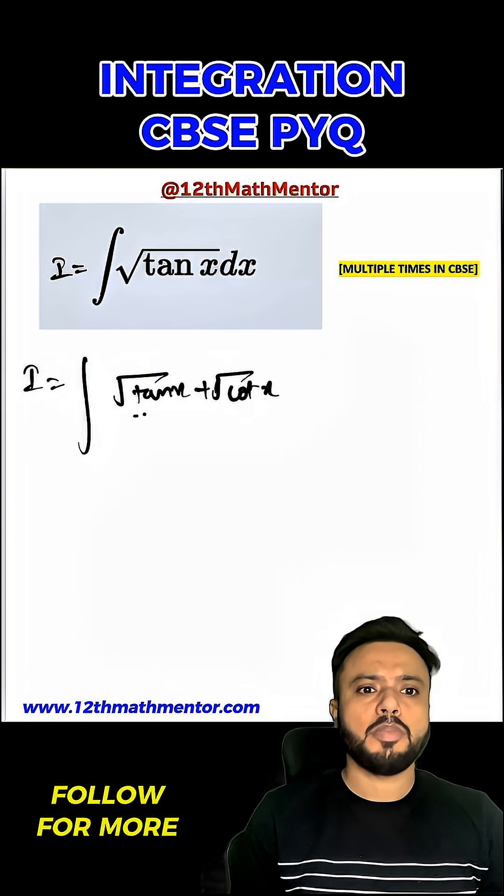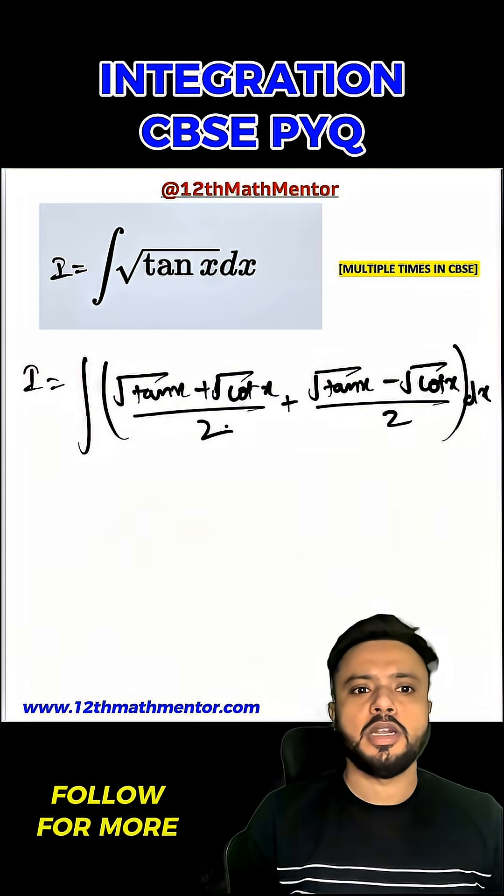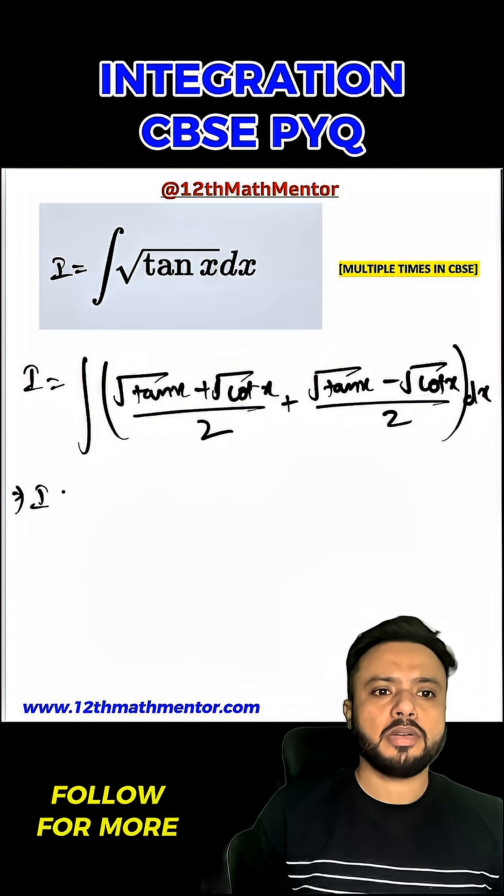I have written root of tan x into its trigonometry twins here. So now I can write it as I equals 1 by 2 root of sin x upon root of cos x plus root of cos x upon root of sin x dx plus 1 by 2 integral of root of sin x upon root of cos x minus root of cos x upon root of sin x dx.